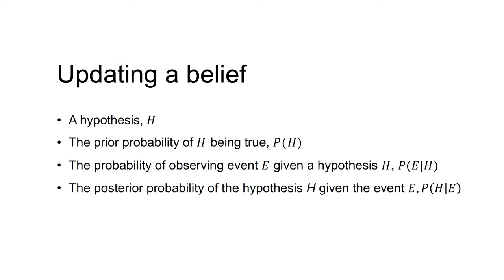We can think of Bayes' rule as how we should update our beliefs in light of a new event. Rational agents should update their beliefs using Bayes' rule. In this case, the following elements are involved.